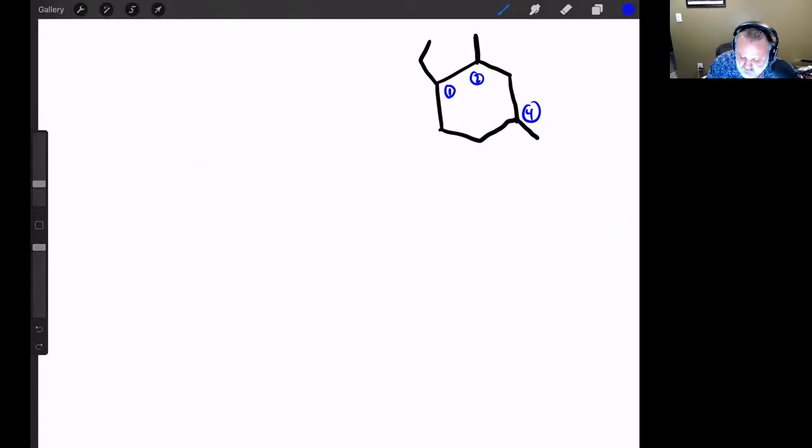It's one, two, four. So what do I have? One-ethyl, two, comma, four-dimethylcyclohexane.